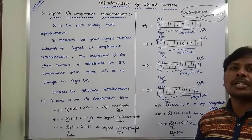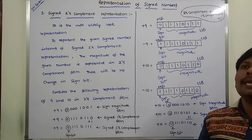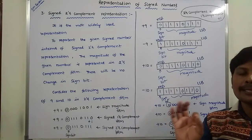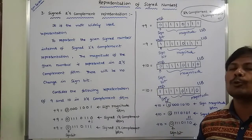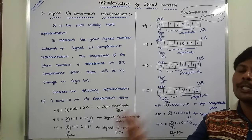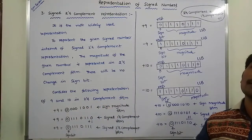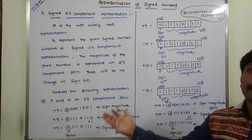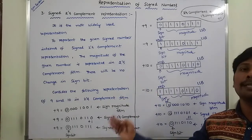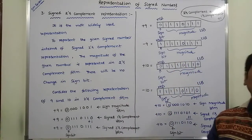This is the description about representation of signed numbers. We use three representations: one is sign magnitude representation, second is signed one's complement representation, and third is signed two's complement representation. We have discussed how to represent decimal numbers, whether positive or negative, in all three representations, with examples.